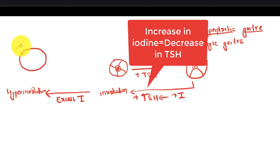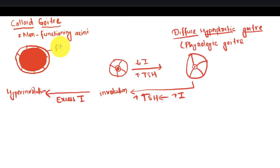It will undergo involution. When there is excess iodine, it will undergo hyper involution and there is formation of colloid goiter, which is non-functioning acini with flattened epithelium distended with colloid.